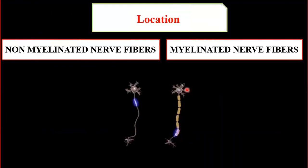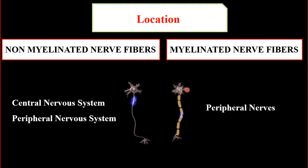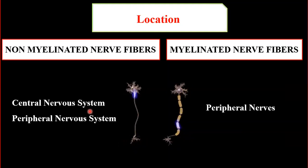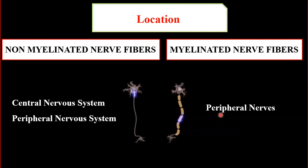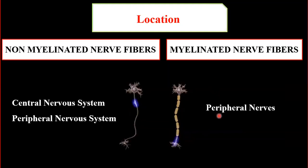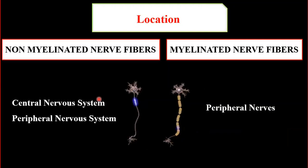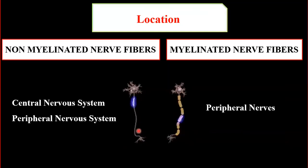Regarding location: in the peripheral nervous system, both myelinated and non-myelinated nerve fibers can be found. In the central nervous system, non-myelinated nerve fibers are present, while myelinated nerve fibers are not present in the central nervous system. This relates to the fact that the peripheral nervous system requires faster nerve impulse conduction, while the central nervous system operates with slower conduction.